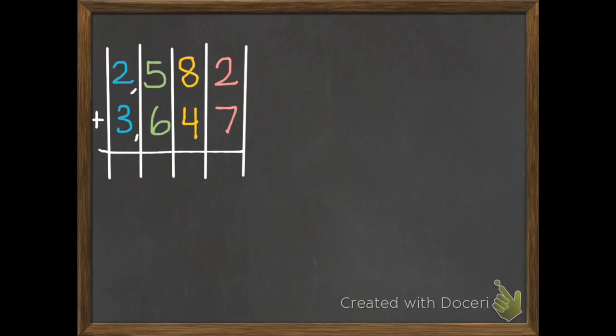When we are adding, we actually start on the right side and move to the left, the opposite of when we read and do a lot of other things, where we start on the left and go to the right. So I'm going to start with my ones. So I have two ones plus seven ones. That's going to equal nine.